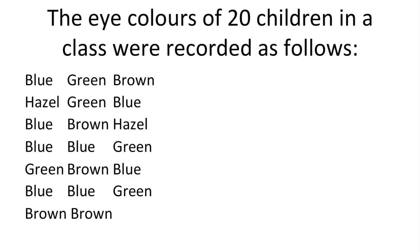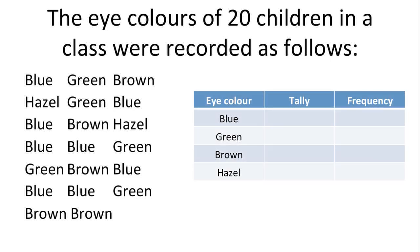If we look here at this particular data collection sheet, it's to do with the eye colours of 20 children in a class. We wouldn't necessarily have to have them written down — we could ask the individuals one by one what their eye colour was. But the data collection sheet makes it very easy to record quickly and effectively how many students have each eye colour.